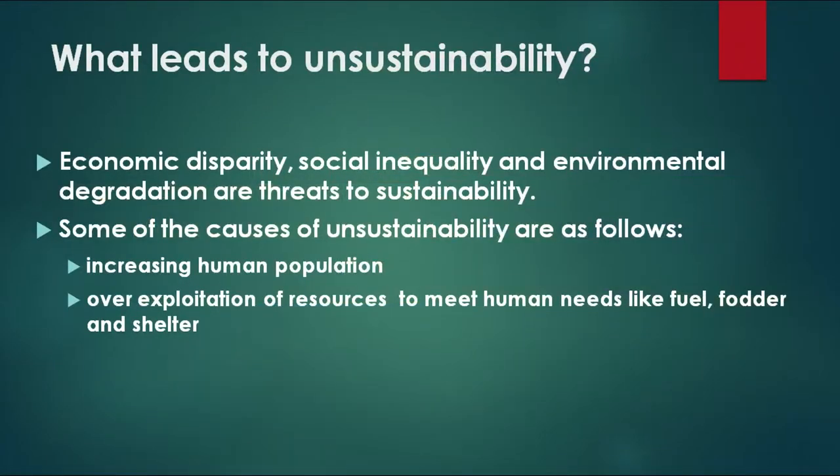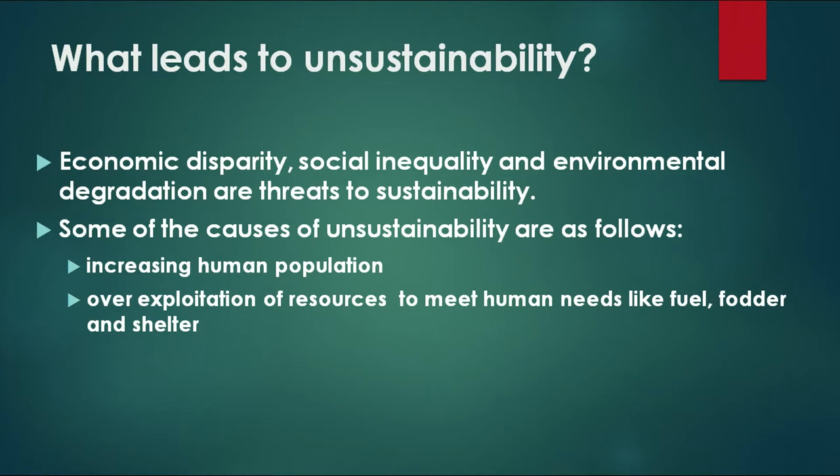Sustainability in terms of economic development is only possible if one ensures an equitable level of development across the board. This means ensuring an even distribution of population, for example. An increase in human population leads to over-exploitation of resources — fuel, fodder, and shelter. One reason for Delhi's high pollution is the increasing number of cars on its roads, which reflects a high density of population.